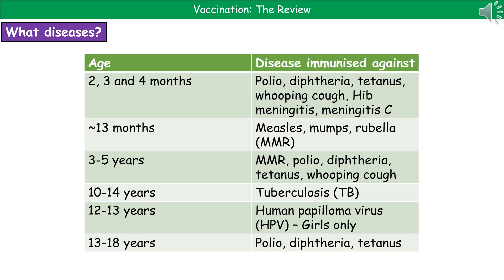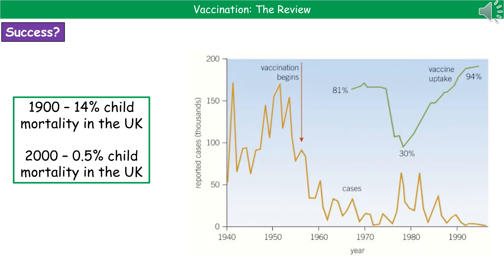So you can see that you're protected against a whole range of diseases that are either very risky in terms of survival rates or can cause quite debilitating disabilities. One thing you need to be able to do is talk about the success of a vaccination. Going back to 1900, we had a 14% child mortality rate in the UK; by the year 2000, that had dropped to just 0.5%. Obviously not all of that is down to vaccinations — we also see improvements in diet, healthcare, etc. But the graph on the right shows us how we can talk about the effectiveness of a vaccination.